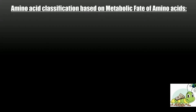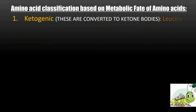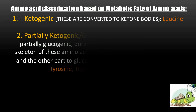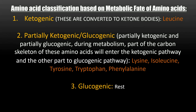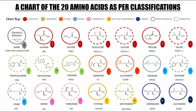The last type of classification is the metabolic fate of amino acids. Number 1 — Ketogenic: these are converted to ketone bodies; only one amino acid — Leucine. Number 2 — Partially ketogenic or glucogenic: during metabolism, part of the carbon skeleton enters the ketogenic pathway and the other part the glucogenic pathway — these are Lysine, Isoleucine, Tyrosine, Tryptophan, and Phenylalanine. The rest of the amino acids are Glucogenic.